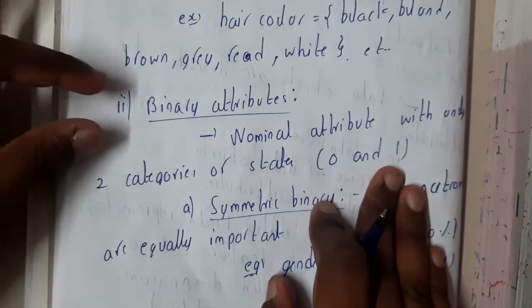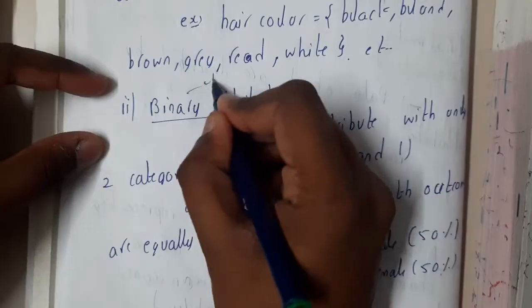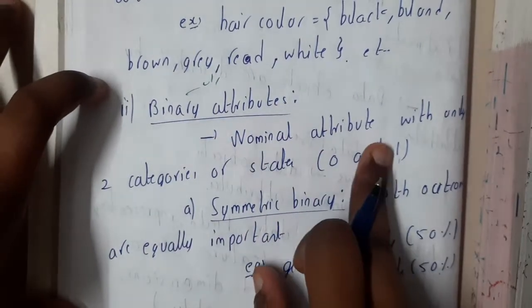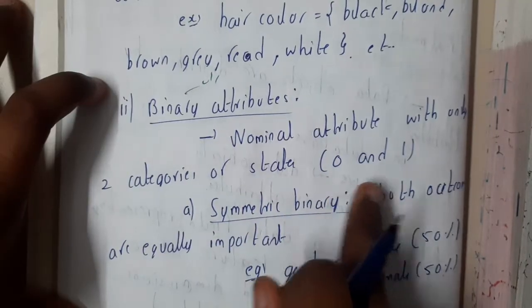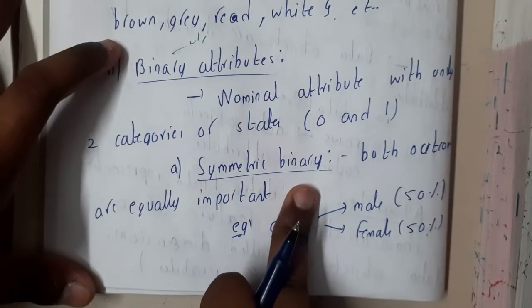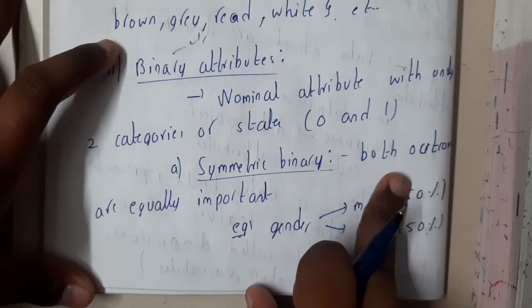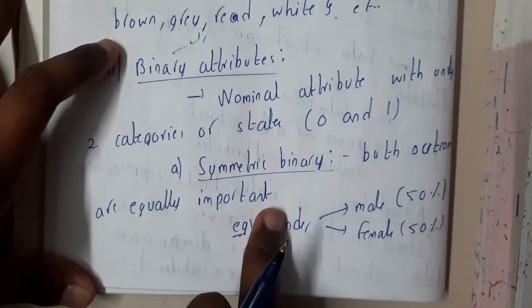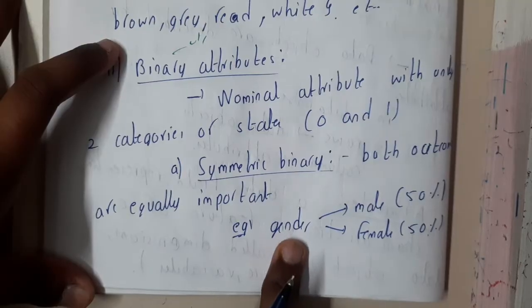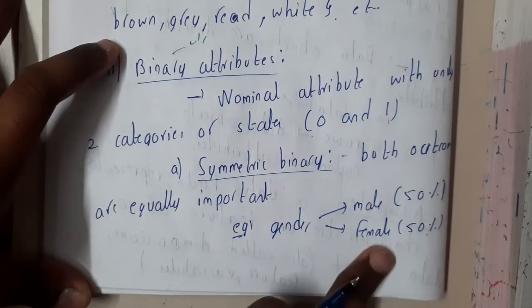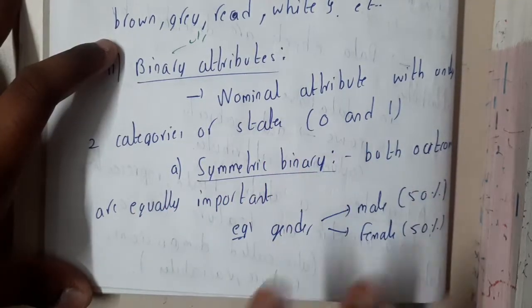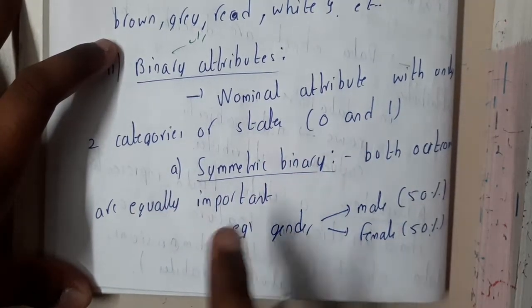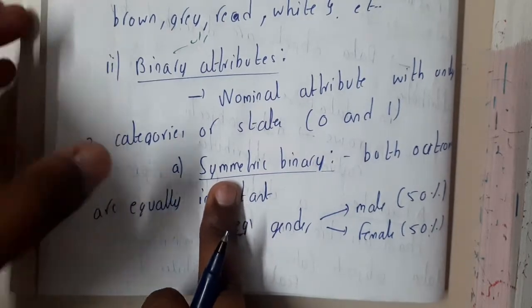The second type is the binary attribute. Any CS student can say binary means zero or one. These are nominal attributes with only two categories or states: either zero or one. Symmetric binary means both outcomes are equal and important. For example, gender — there is a chance of male and female, and approximately both will be almost equal, like fifty-fifty. These are called symmetric binary attributes.